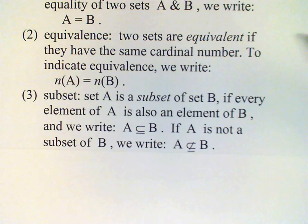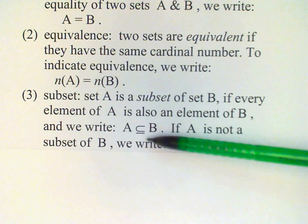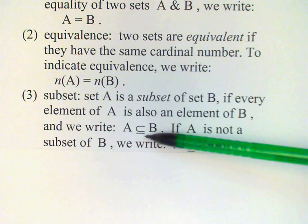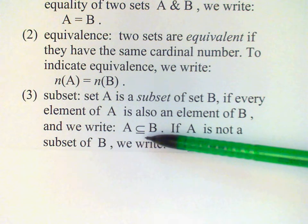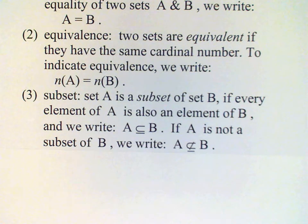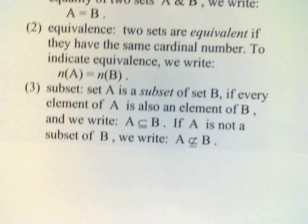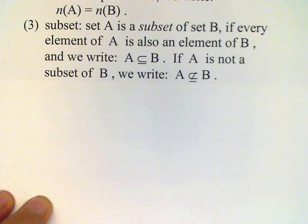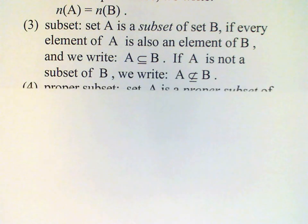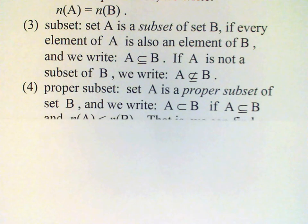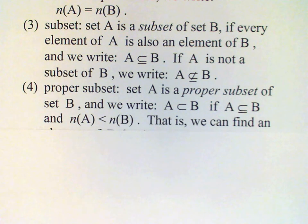Now the fact that we have this line under the symbol suggests that A could be equal to B and that possibility is not precluded by this definition. But if we want A not to be equal to B, then we can refer to A as a proper subset if we can find an element in B which is not in A.